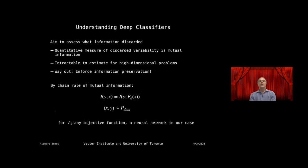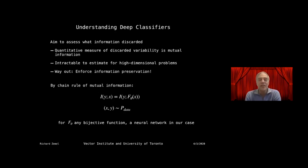Mutual information is hard to estimate for high-dimensional problems. So I advocate a different approach: instead of discarding variability, we want to construct representations that preserve all of the information in the input. The basic idea uses a bijective function F(X) with parameters theta as a neural network. The mutual information between Y and X equals the mutual information between Y and any bijective function F(X), so the bijective network preserves all information about X.